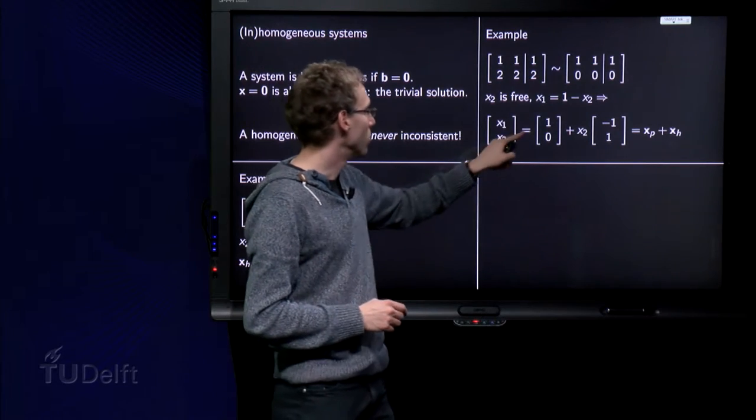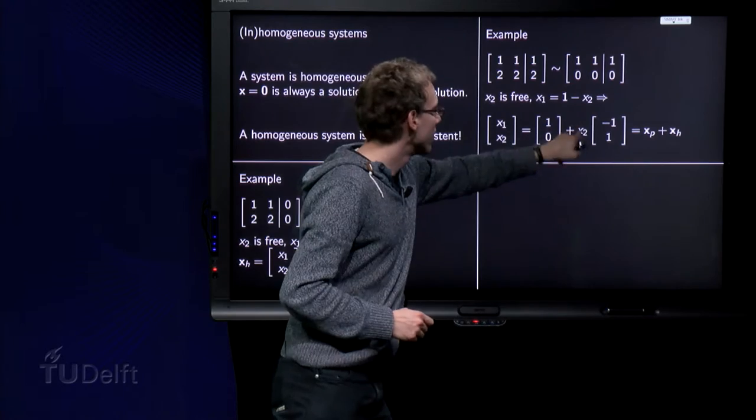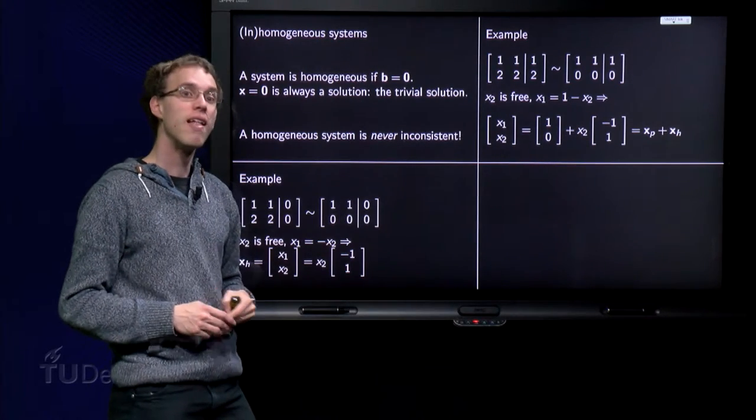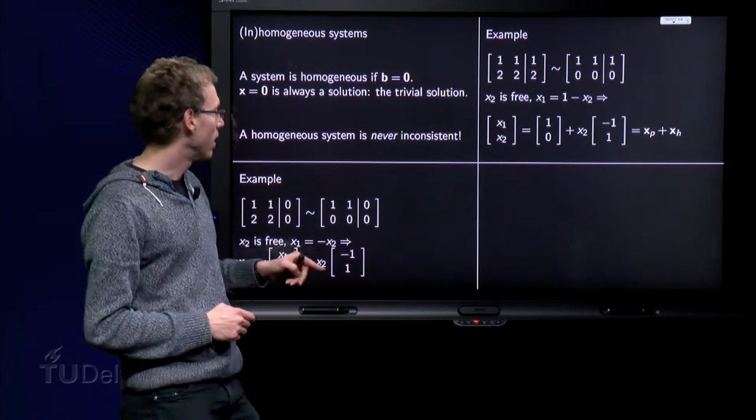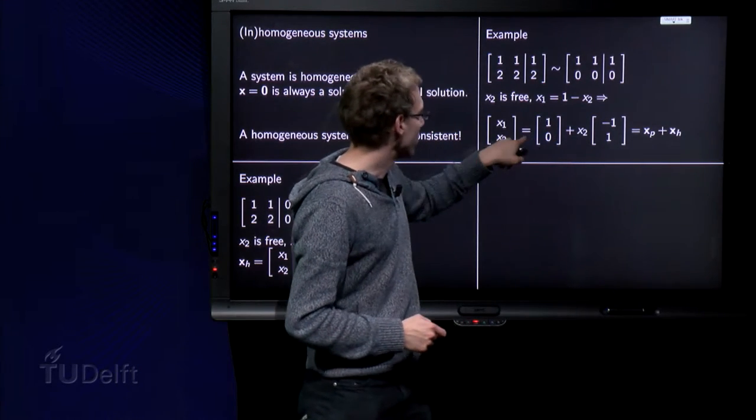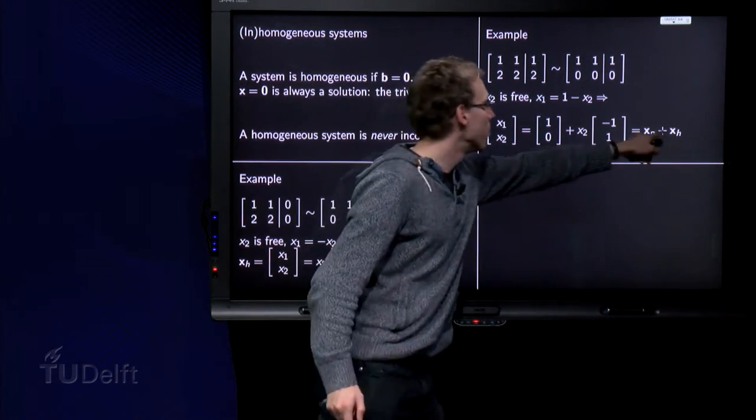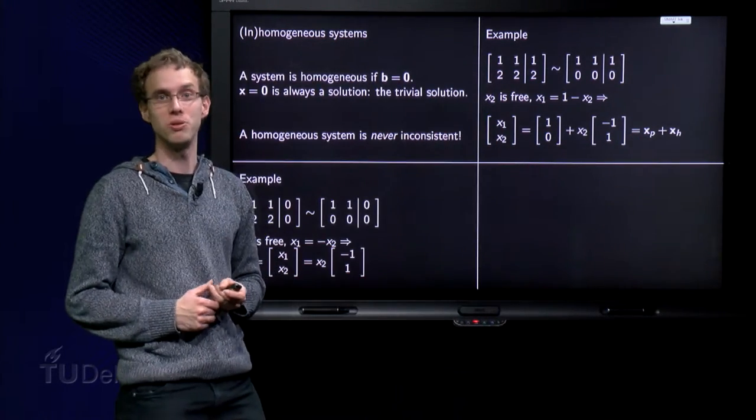And then we see something nice arise. We see that the solution of the inhomogeneous problem is in fact the sum of two solutions, 1, 0 and x2 times minus 1, 1. And this x2 times minus 1, 1 is exactly the solution of the homogeneous problem. So, what do we see? Our solution is the sum of some particular solution, xp, plus the homogeneous solution.